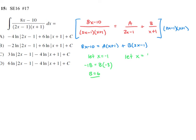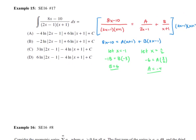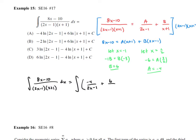Letting x equal negative one: left side gives negative 18, and B times negative three, so B equals positive six. Letting x equal positive one half: left side gives negative six, and A times three halves, so A equals negative four. So the integral of (8x-10) over the denominator splits into negative four over (2x-1) plus six over (x+1).